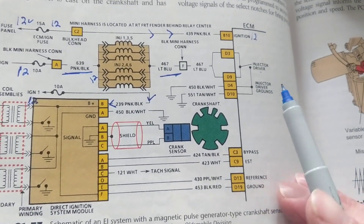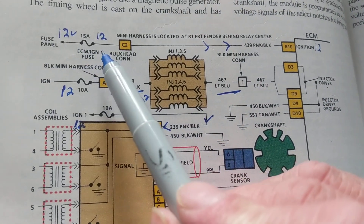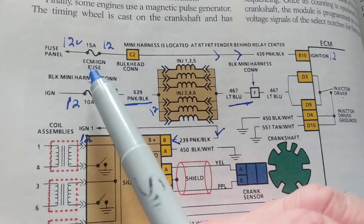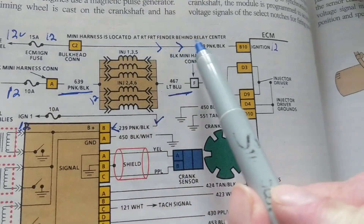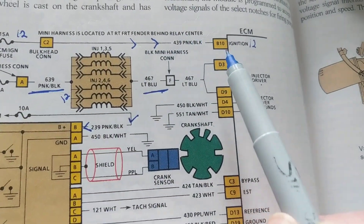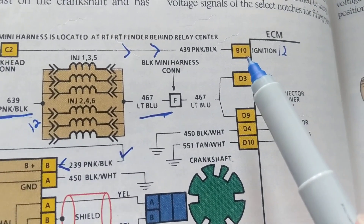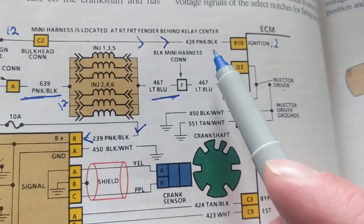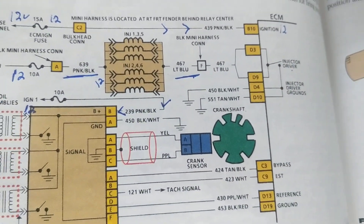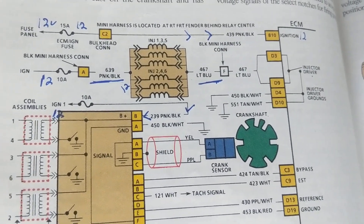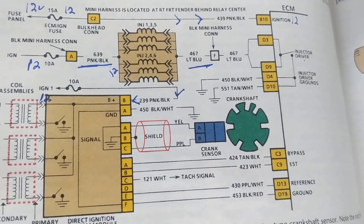So now we know we have a problem with our computer. If you look at this diagram we spoke about before, the ECM ignition fuse goes to terminal B10, which is a pink and black striped wire. Now what's the first thing that you do? My format of troubleshooting is usually to ask questions so you can evaluate your own performance.